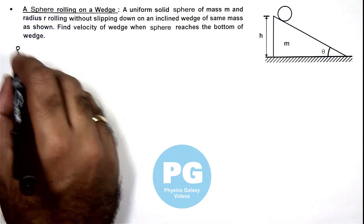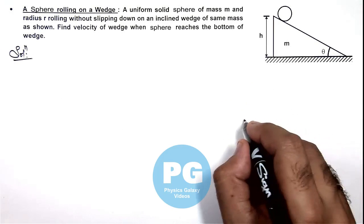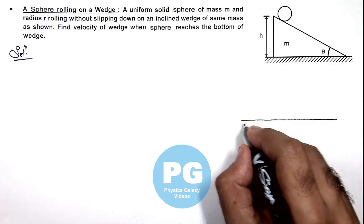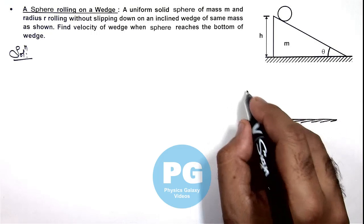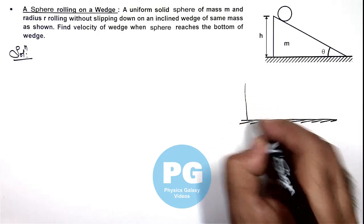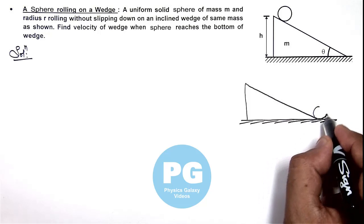Now in this situation we can analyze the case when the sphere reaches the bottom of wedge. Then wedge will attain a leftward velocity because in this situation no external force is acting on the system in horizontal direction.